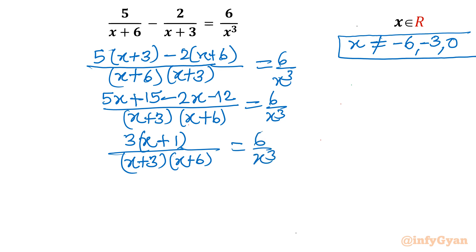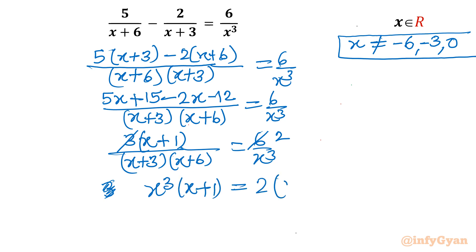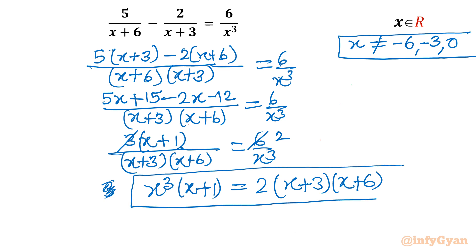Now I will cross multiply. We can cancel 3 with the 6, giving a factor of 2. So what is left is x³(x+1) equal to 2 times (x+3) times (x+6). Now this equation is in standard form.